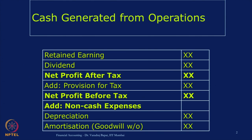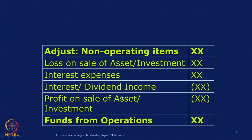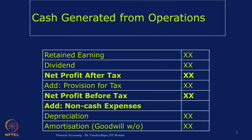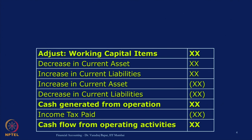In the first part, we calculate the cash generated from day-to-day activities of business and normally it is done using the indirect method. So we start with profit, then add back non-cash items or non-operating items. We make adjustment for some items which need to be deducted. In short, depreciation should be added, items like loss or interest expenses are added, while items like interest income or profit on sale of investments are reduced. That gives you funds from operations. Then we also make adjustment for working capital items and income tax, which gives you cash flow from operating activities.